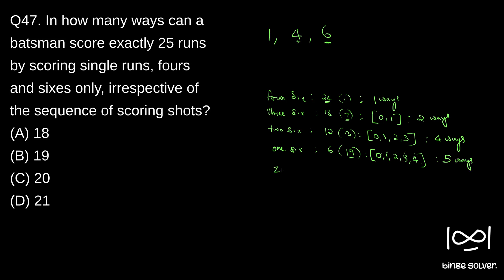So 0 sixes. In 0 six case, 0 runs by 6. So 25 runs he has to score using 4 and 1. So here we have 25, 0, 1, 2, 3, 4, 5 and 6. 6 score means 24 runs. And 7 score means 7×4 is 28 which is greater than 25. So he cannot score 7 fours. So these are the total possible ways. So how much? 7 ways.